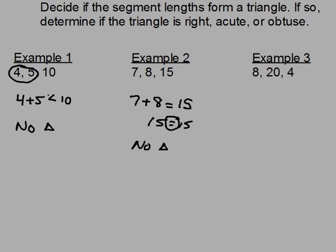For sides eight, twenty, and four, sometimes textbooks put the largest side somewhere other than last — so you have to watch for that. Twenty is the largest side, so we add eight plus four, which is twelve. That's certainly not larger than twenty, so since twelve is less than twenty, we've got no triangle. That's always the first thing to do when given three side lengths: determine whether a triangle exists, and if not, we're done.